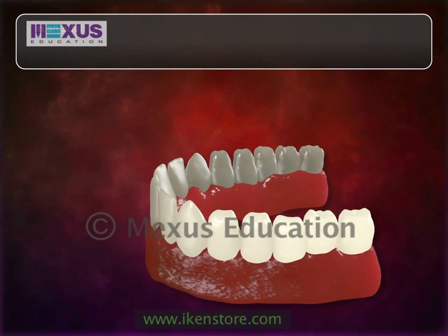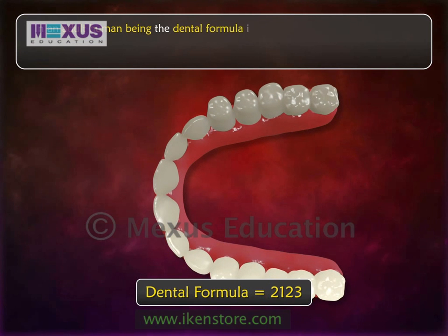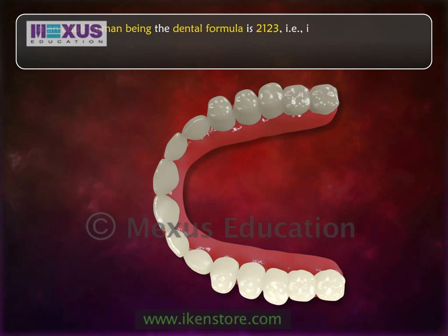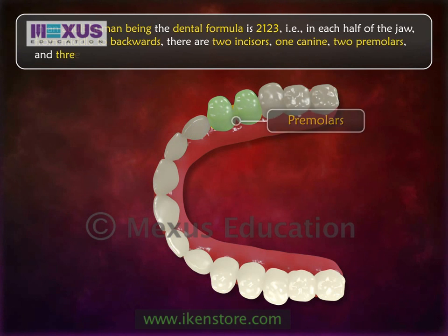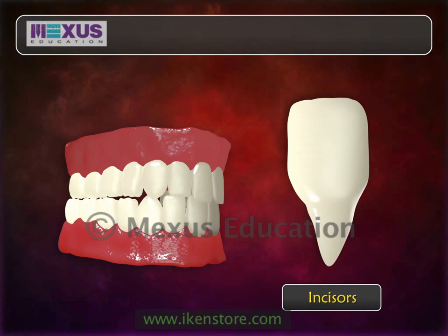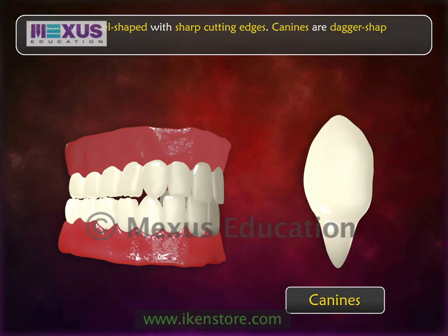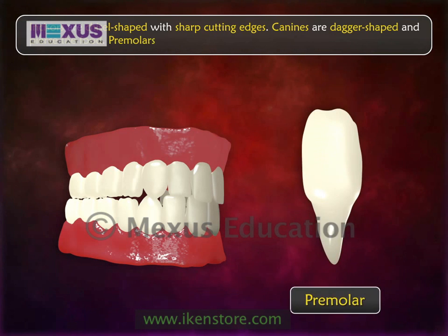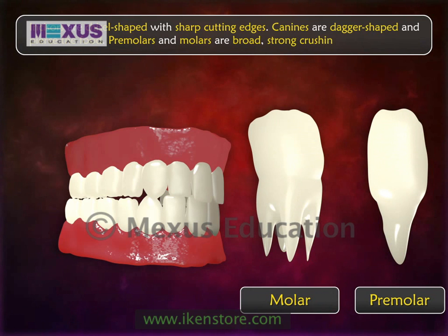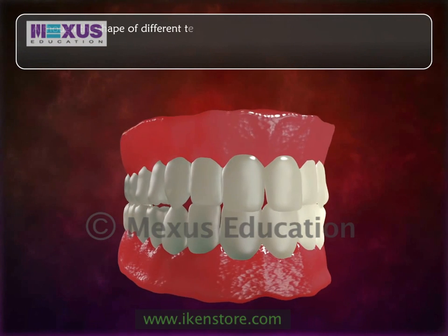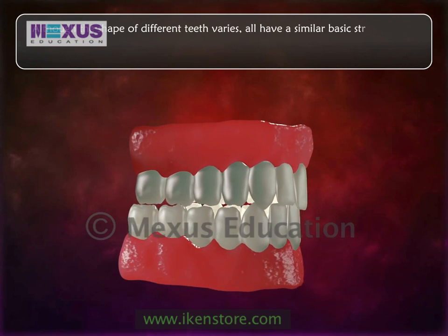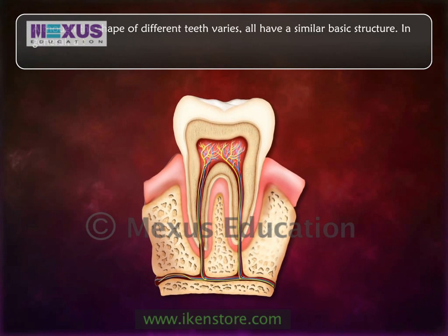In an adult human being, the dental formula is 2-1-2-3, meaning that in each half of the jaw, from the middle backwards, there are two incisors, one canine, two premolars, and three molars. Incisors are chisel-shaped with sharp cutting edges. Canines are dagger-shaped and pierce the food. Premolars and molars are broad, strong crushing teeth.